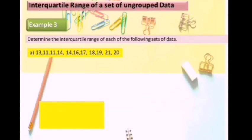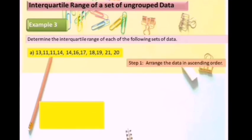Now we are going to learn the interquartile range of a set of ungrouped data. Let's see Example 3. Determine the interquartile range of each of the following sets of data. We have 5 steps to determine the interquartile range. Step 1: arrange the data in ascending order, meaning from the smallest value to the highest value.